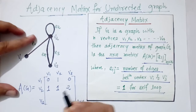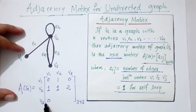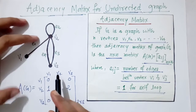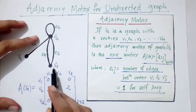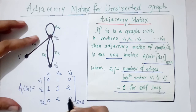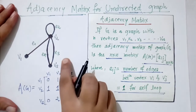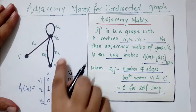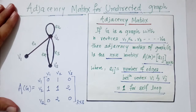From v3 to v1 there is no edge, so we write 0. From v3 to v2 there are 2 edges. From v3 to v3 there is no self-loop, so we write 0. This completes the adjacency matrix for this graph — a matrix of order 3×3 representing edges between pairs of vertices.